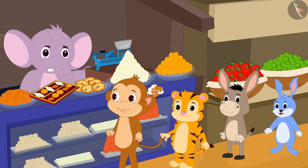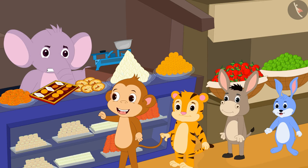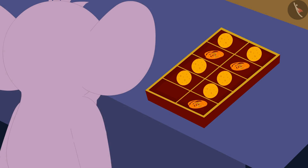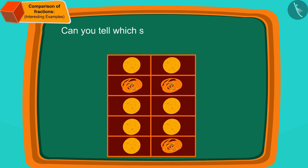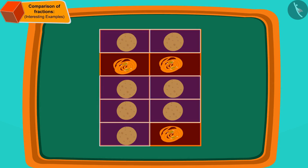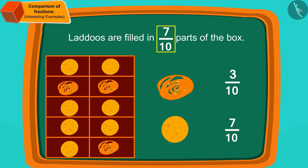Babban remembered that Chanda loved laddus, so he asked Appu to fill laddus in the parts where kaju katli was filled. Appu started getting angrier, but still he filled laddus instead of kaju katli. Can you tell which sweet is now in the largest part of the box, and in how many parts? Correct — laddus are filled in the largest part of the box: seven-tenth parts.